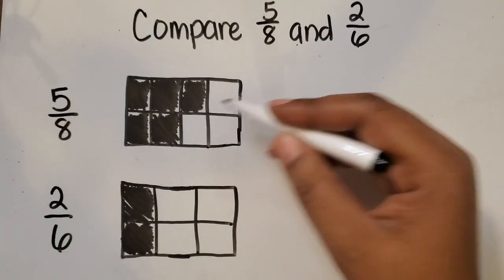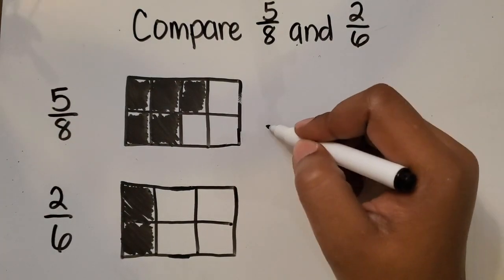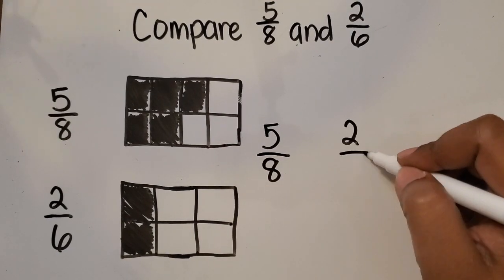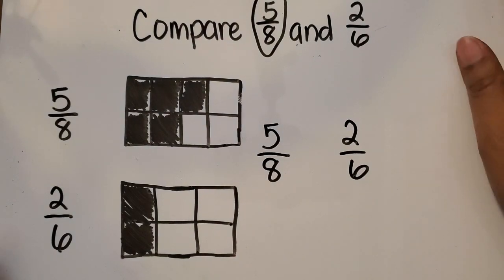So we can now see 5 eighths is greater than 2 sixths. So let's write our comparison statement. 5 eighths and 2 sixths. We know 5 eighths is the greater value.